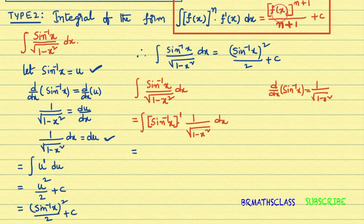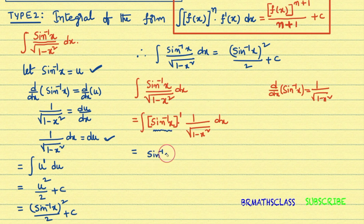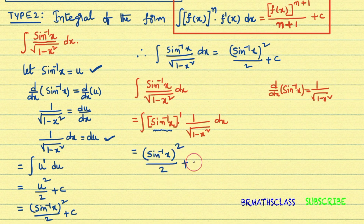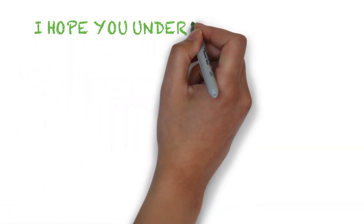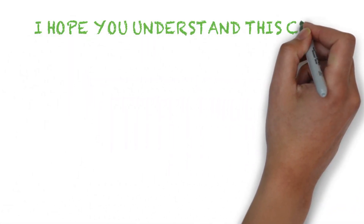In such cases, we write the answer directly as f of x whole power n plus 1 divided by n plus 1 plus c. Here f of x is sin inverse x, so the answer is sin inverse x whole power 2 divided by 2 plus c. I hope you understand this class.